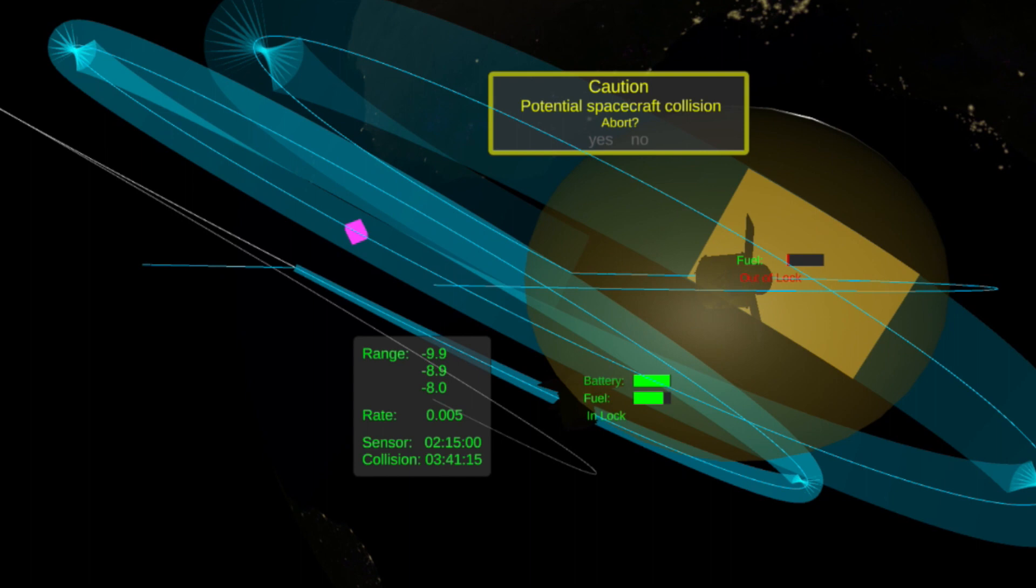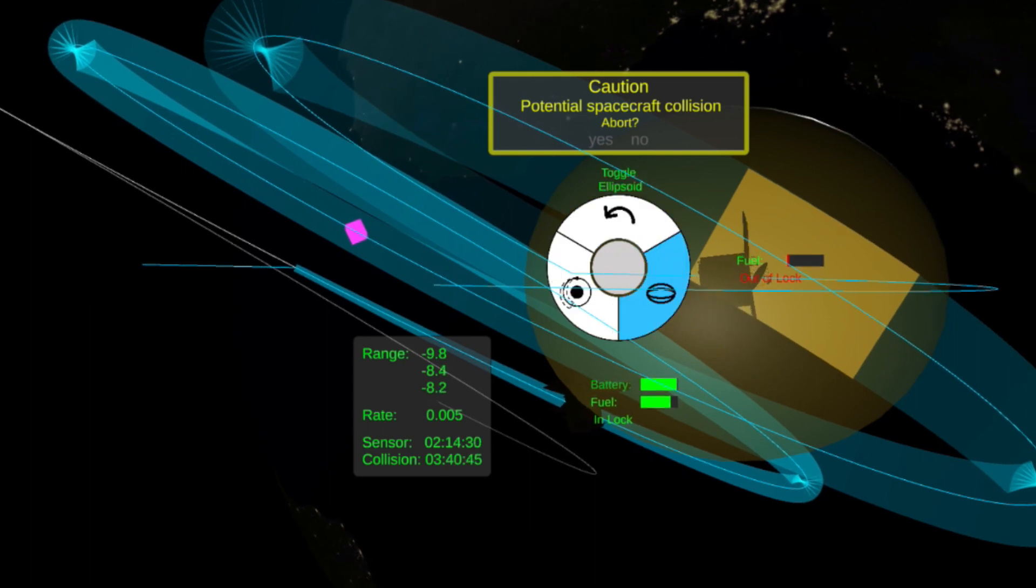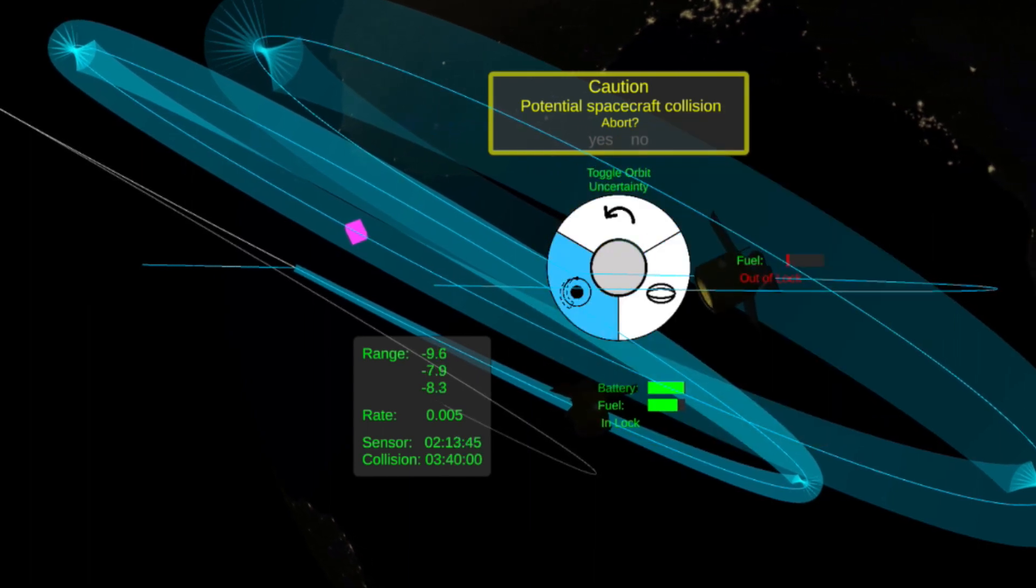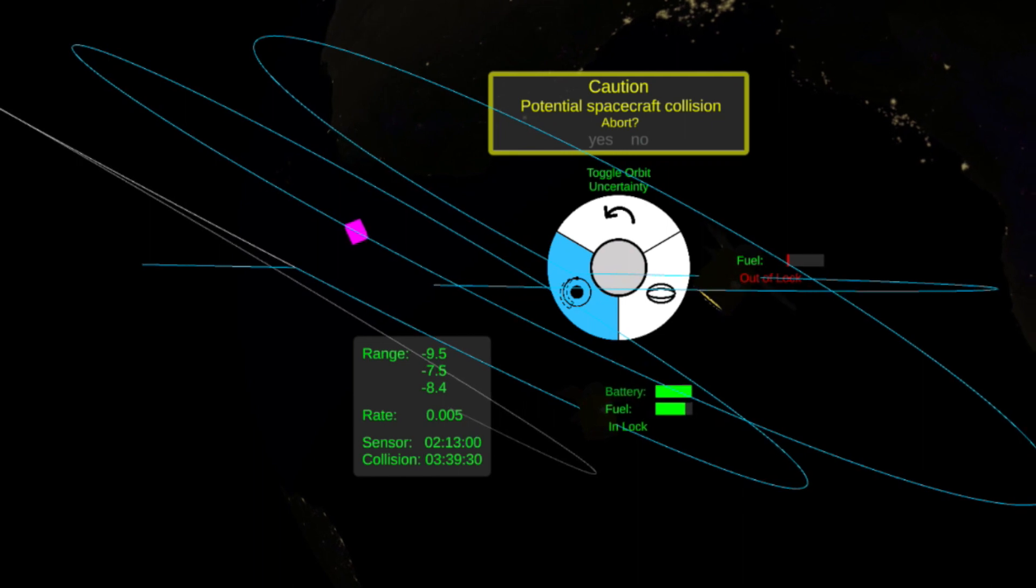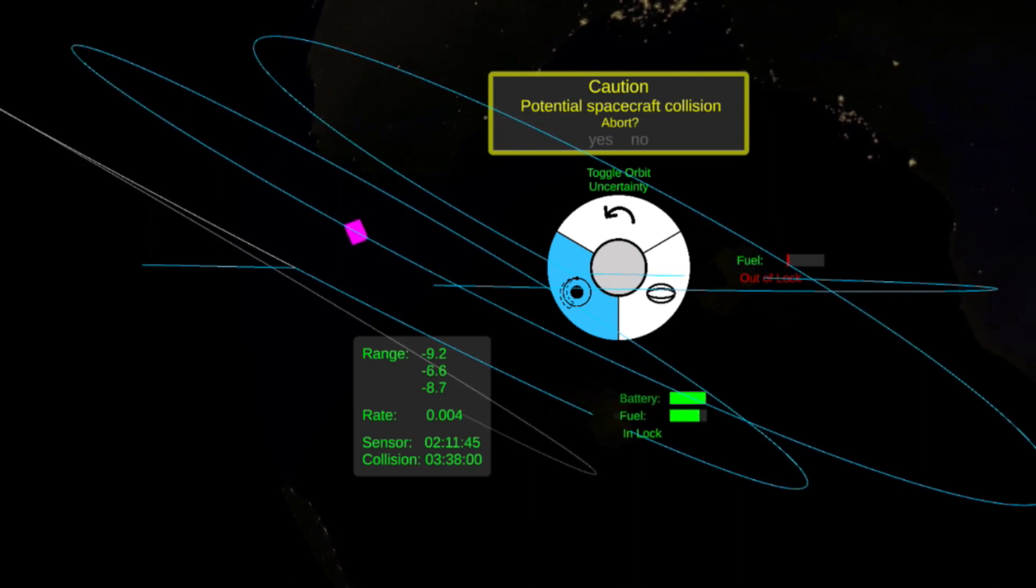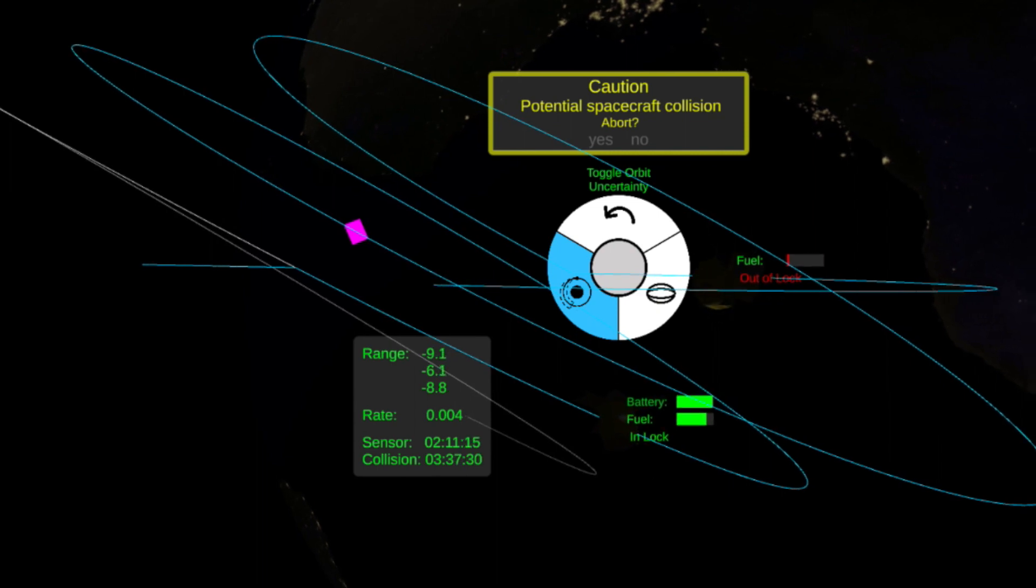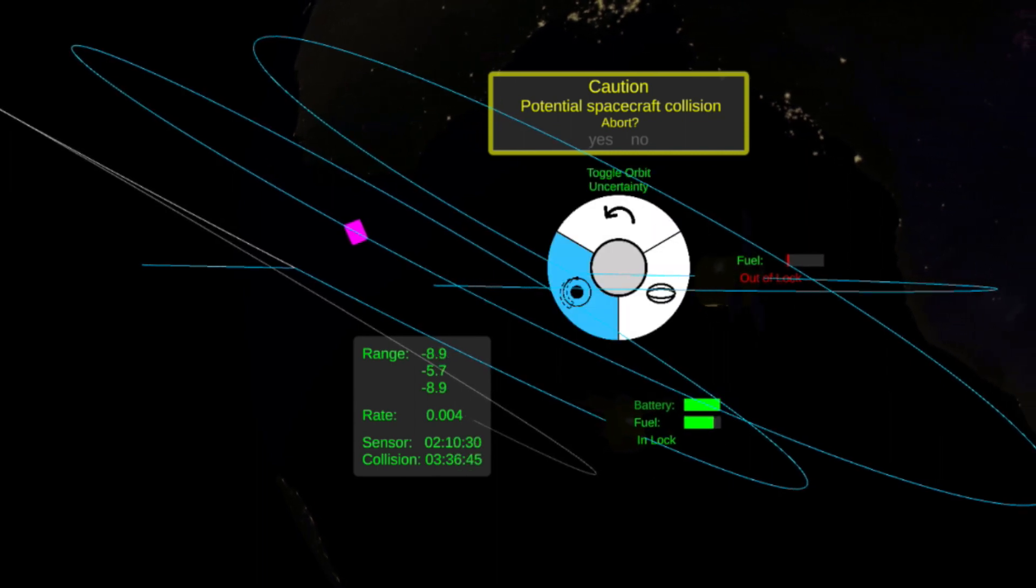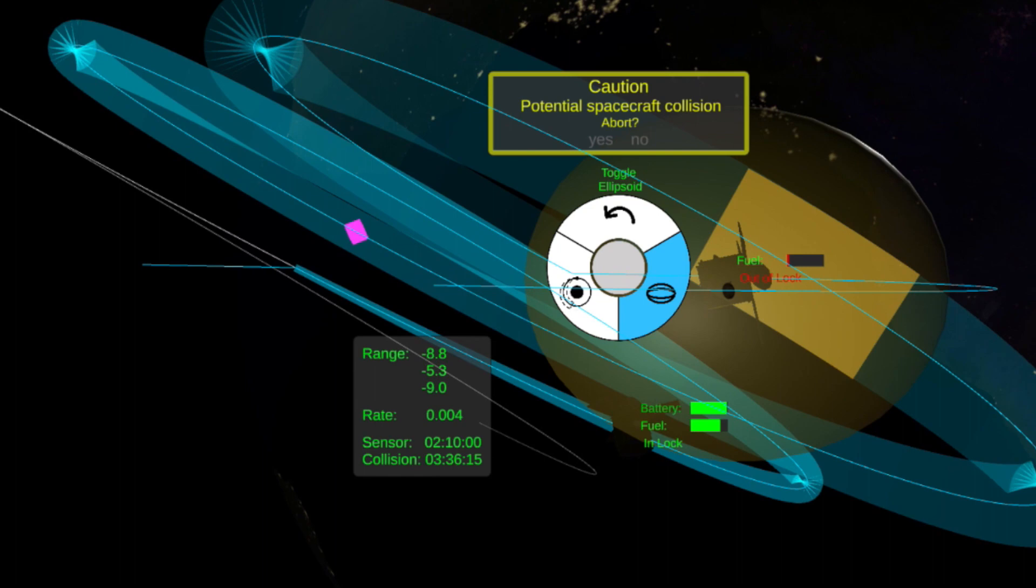We can also look at how different uncertainties affect our visualizations. So if we turn off the ellipsoid and the uncertainty orbit, we can now just see the nominal trajectory of the two satellites relative to each other. I'm going to turn it back on so we can see what happens after the sensor update.